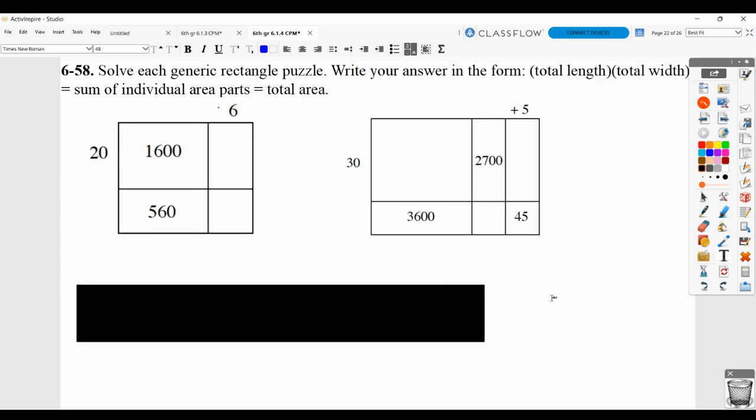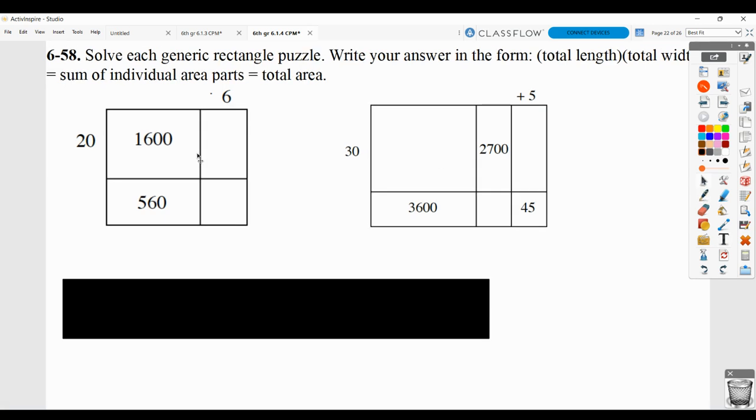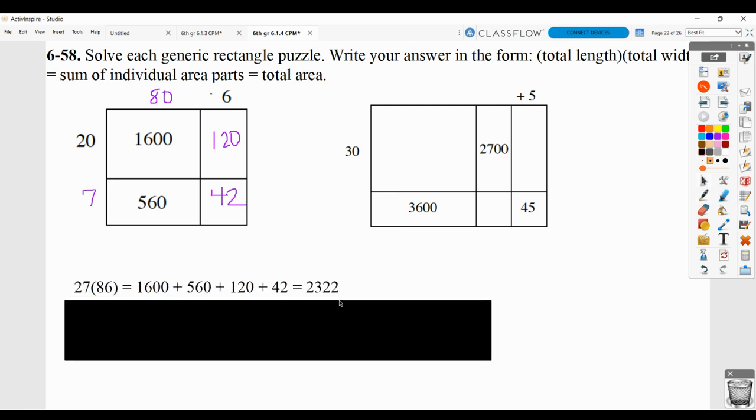Here, you need to make sure that you fill in the missing parts. So, for example, we'd say 20 times what equals 1,600. And that, of course, would be 80. And then, you know, 20 times 6, this would be 120. 80 times what gives you 560? Well, that would be 7. 7 times 6 gives you 42. And then you should show that you added all those sections up and got the total.